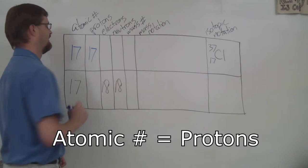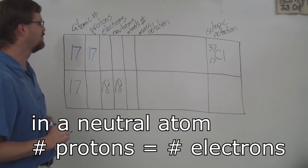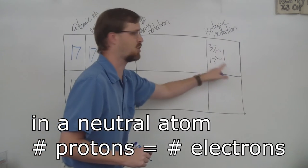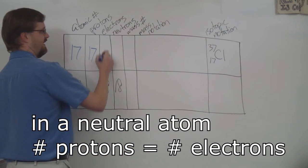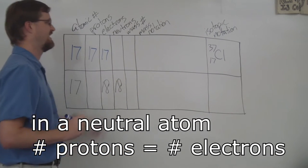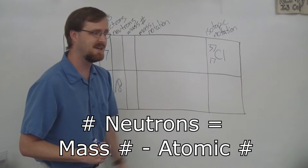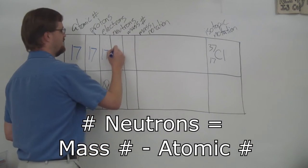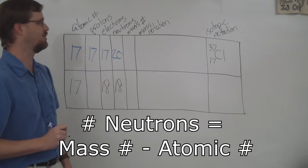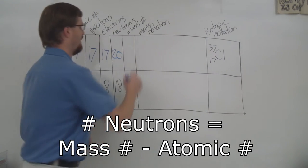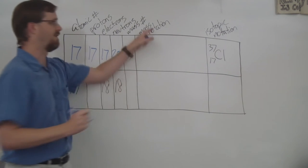When it comes to the electrons, well, do we see a charge over here? No, we do not, so protons and electrons are the same. Now for the neutrons, we take 37 minus 17. The difference of that is 20. We have 20 neutrons.